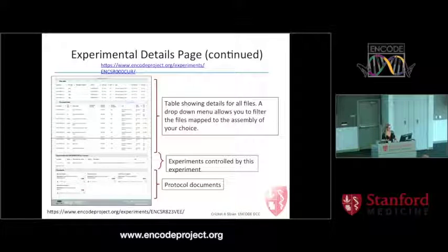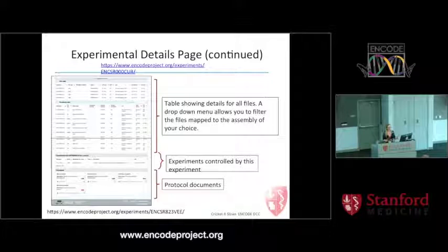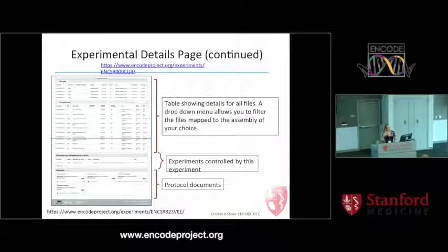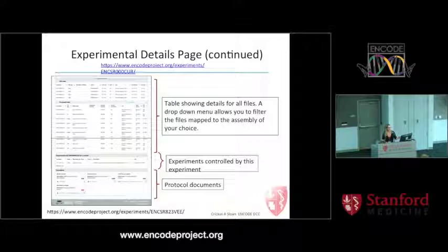In addition to experiments — where a wet lab experience takes tissue, processes it, and sequences it — annotation objects hold what you might consider computational experiments. These take ground-level data, combine it in some way, and produce an annotation like enhancer-like regions. There are objects in our system where you'll come to pages that look similar to experiment pages but are annotation pages.